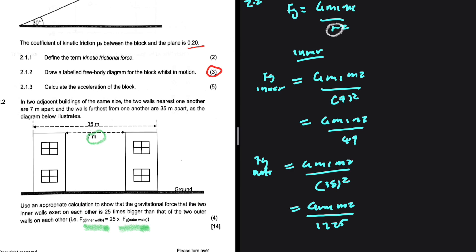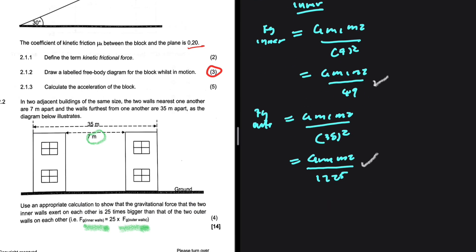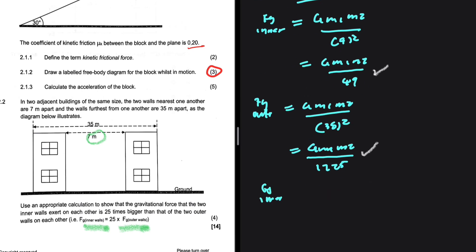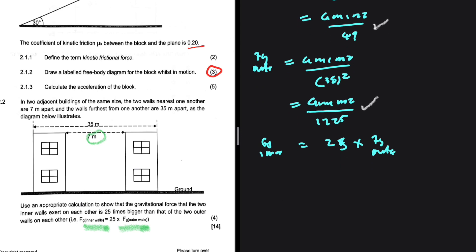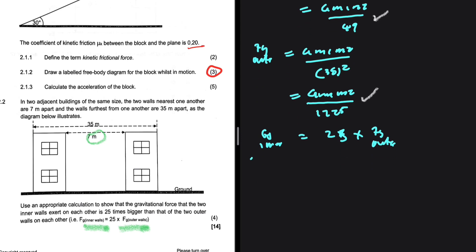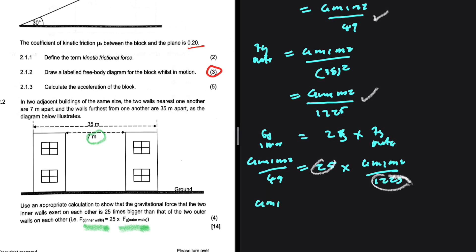Now we need to show that fg_inner equals 25 times fg_outer. Taking fg_inner as G m1 m2 divided by 49, and 25 times fg_outer as 25 × (G m1 m2 divided by 1225): 25 divided by 1225 simplifies to 1 divided by 49, confirming that fg_inner equals G m1 m2 divided by 49. Therefore fg_inner is indeed equal to 25 times fg_outer.